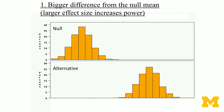Now we're going to go through a set of graphical illustrations to give us some intuition about why these factors affect the statistical power, and then we're going to derive it formally. The first one is: larger effect size increases power.